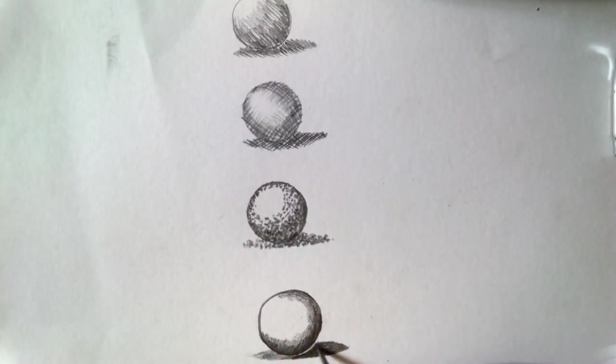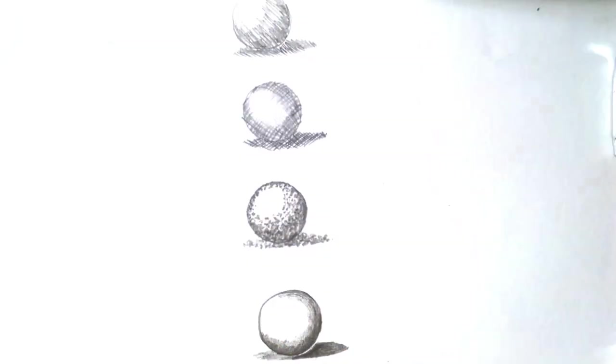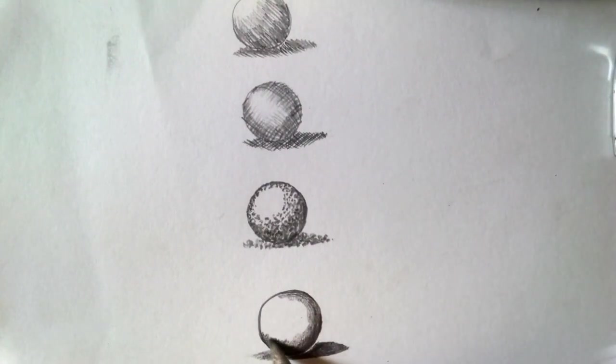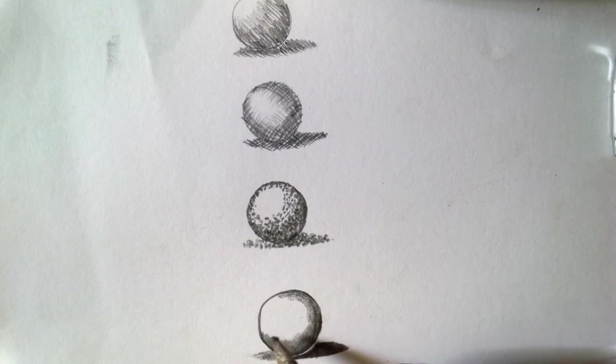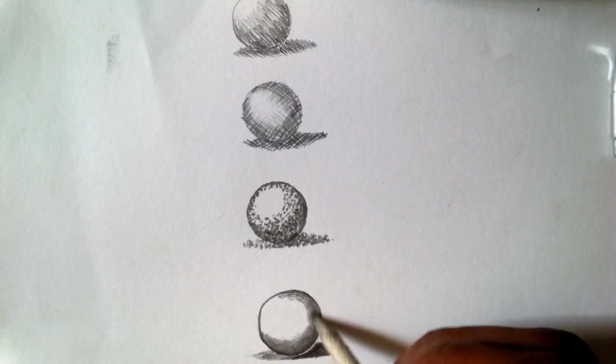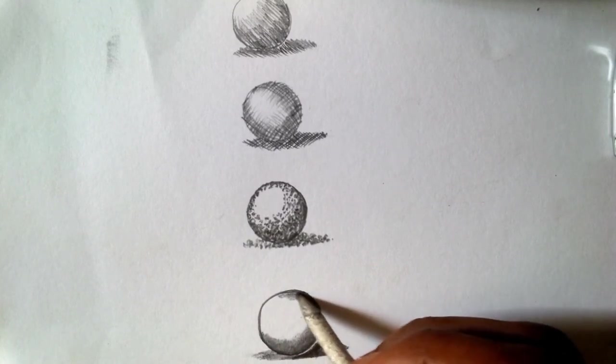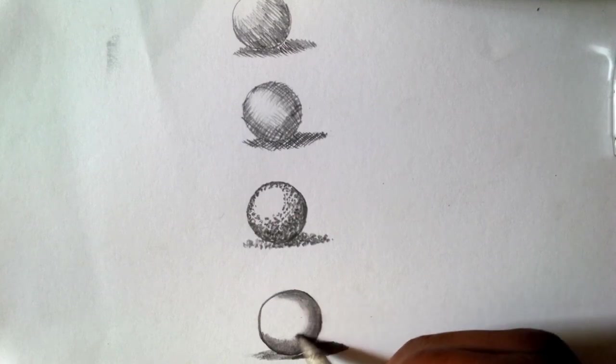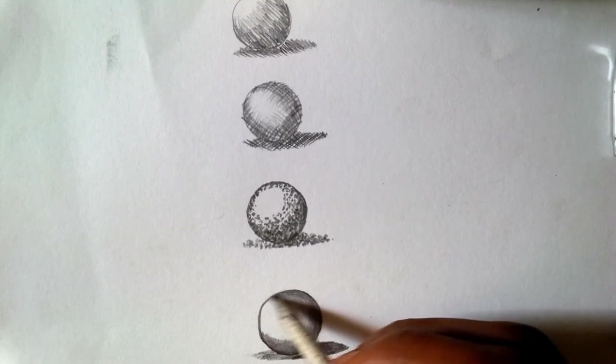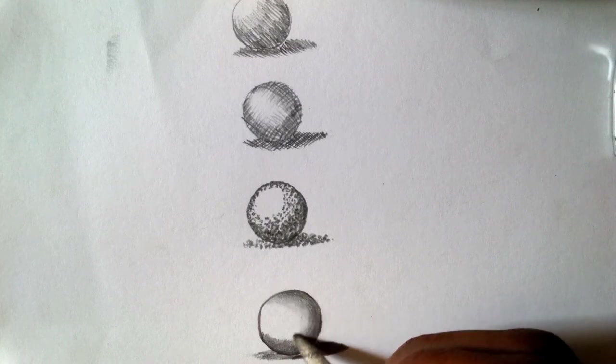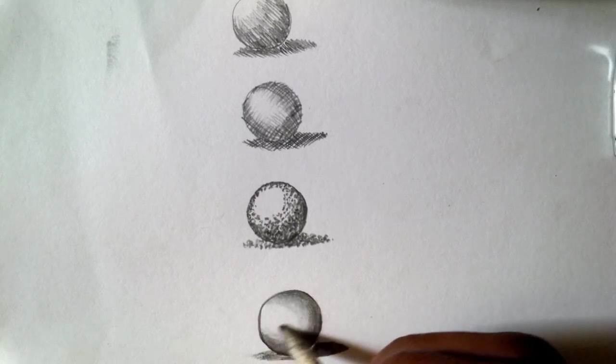Smudging is generally much faster than stippling. You can push pencil around the paper and cover areas very quickly. However, beginners tend to gravitate towards smudging and overuse the technique. Make sure smudging isn't the only pencil shading technique you should use, right?